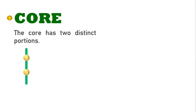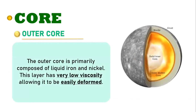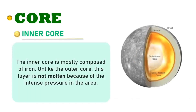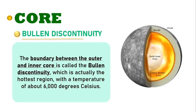The core has two distinct portions: the outer core and the inner core. The outer core is primarily composed of liquid iron and nickel. This layer has very low viscosity, allowing it to be easily deformed. Meanwhile, the inner core is mostly composed of iron. Unlike the outer core, this layer is not molten because of the intense pressure in the area. The boundary between the outer and inner core is called the Bullen discontinuity, which is actually the hottest region, with a temperature of about 6,000 degrees Celsius.